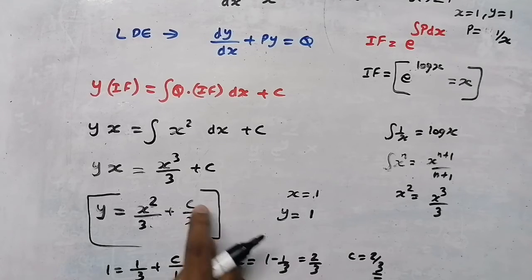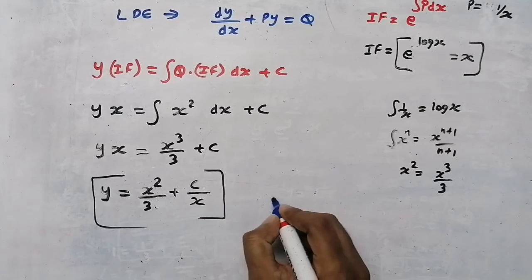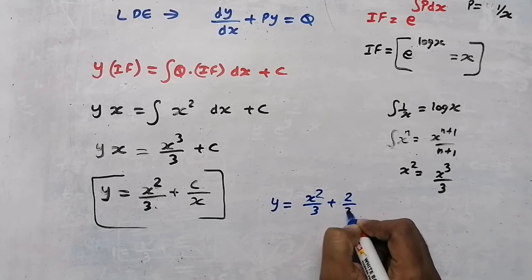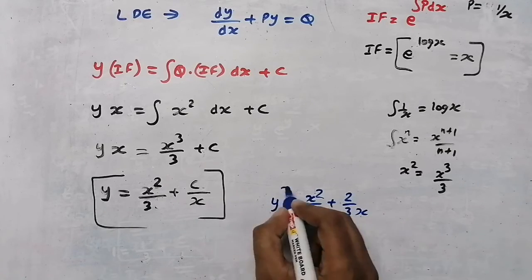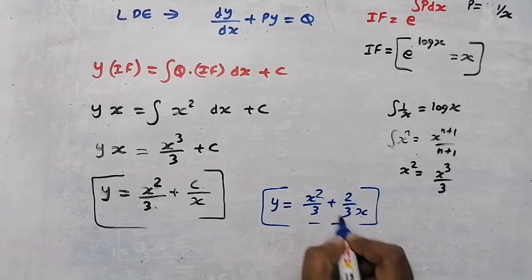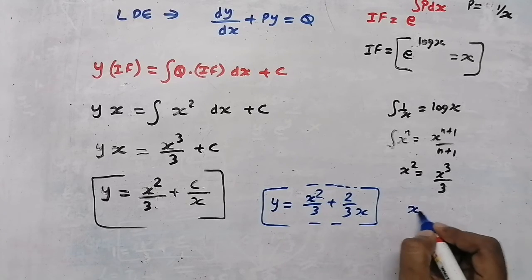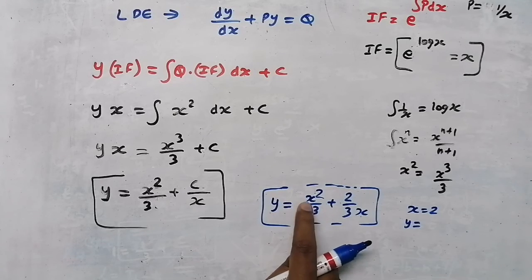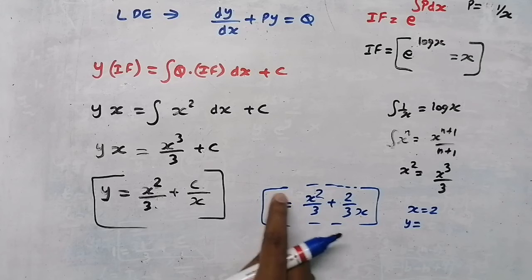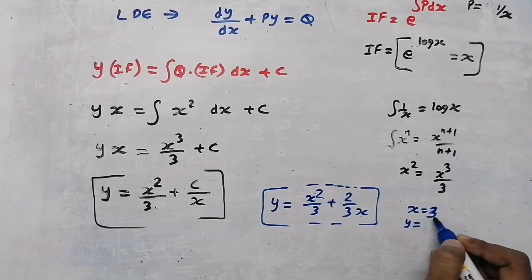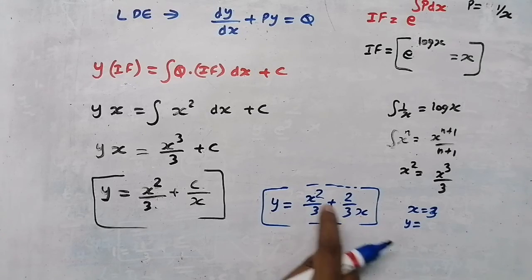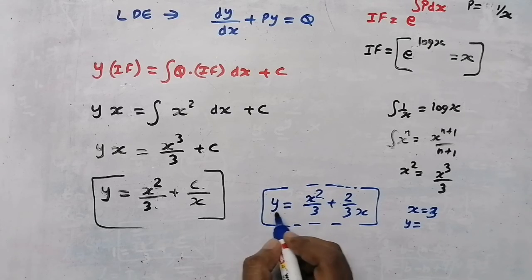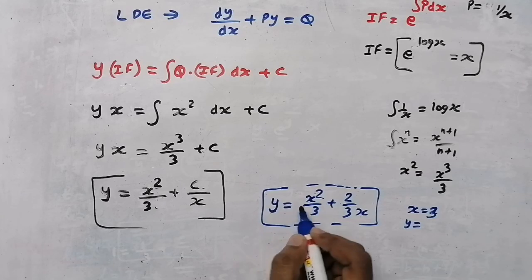Substituting C = 2/3 back, the final solution is: y = x²/3 + (2/3)/x, or y = x²/3 + 2/(3x). Now if someone asks for y at x = 2 or x = 3, we simply substitute that value of x into this equation to find y.